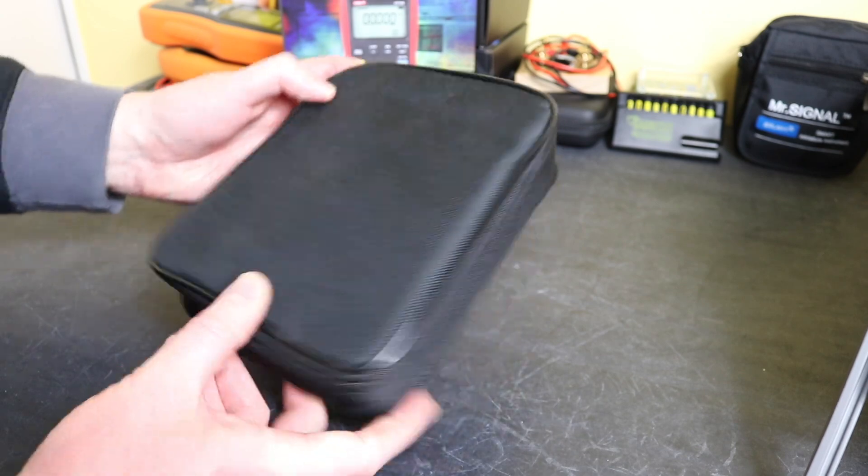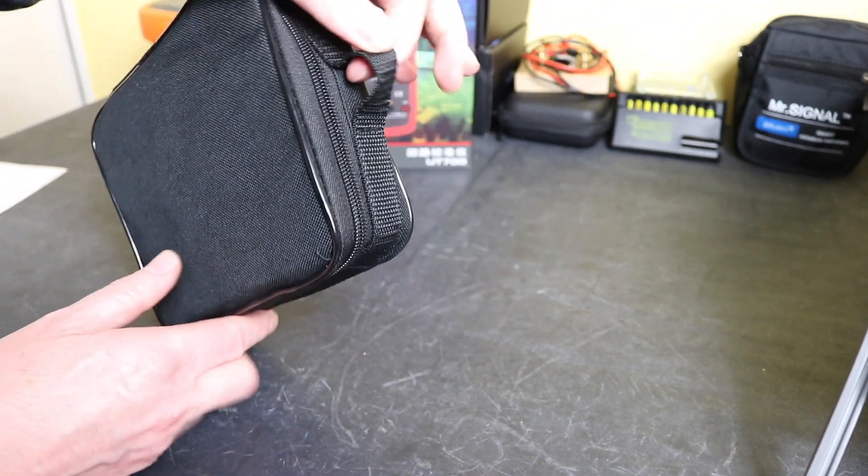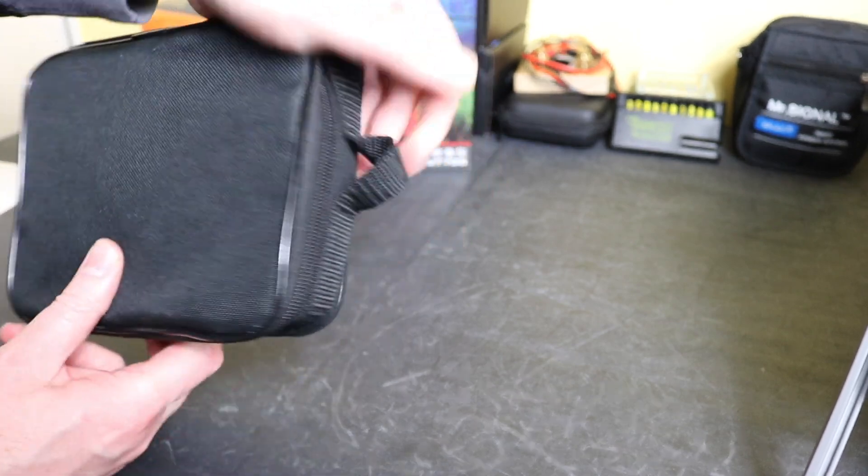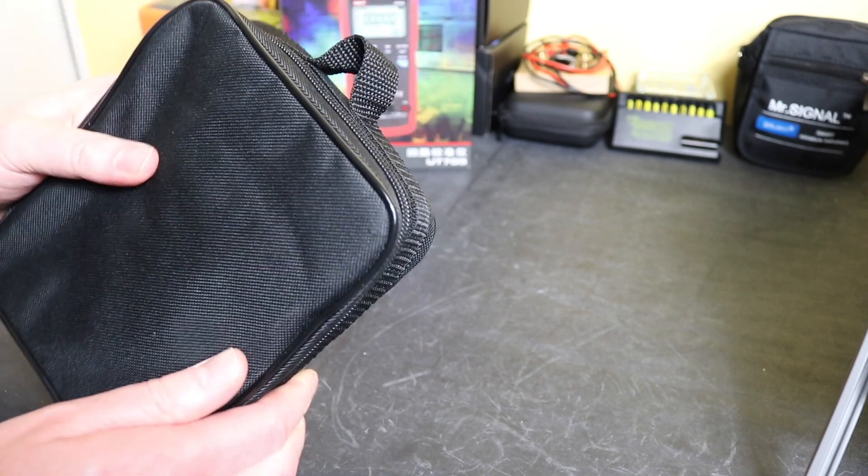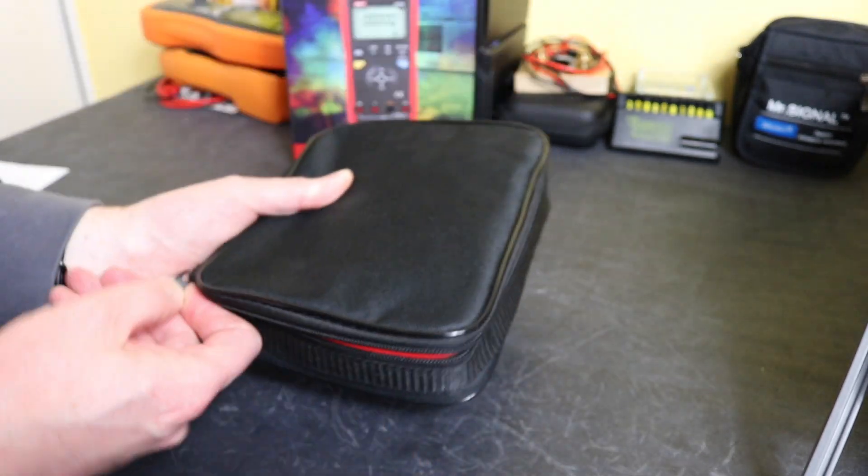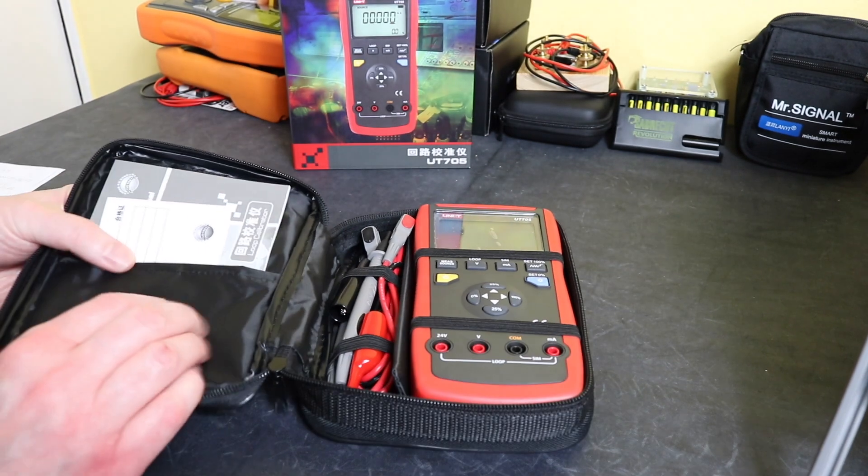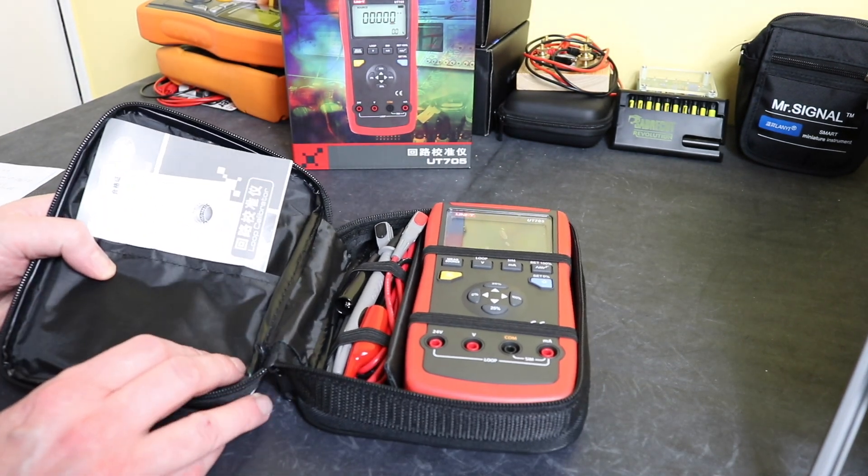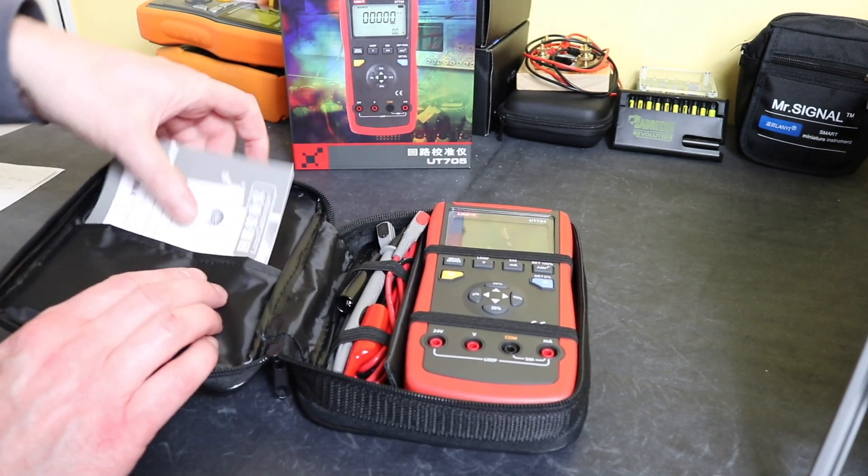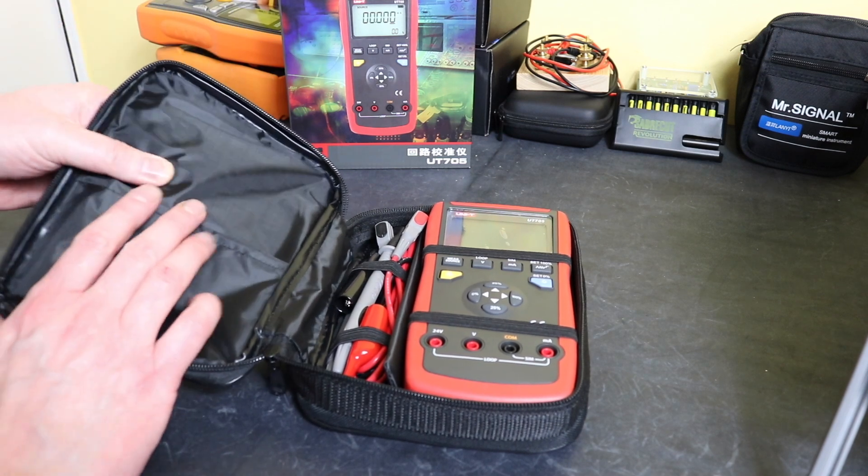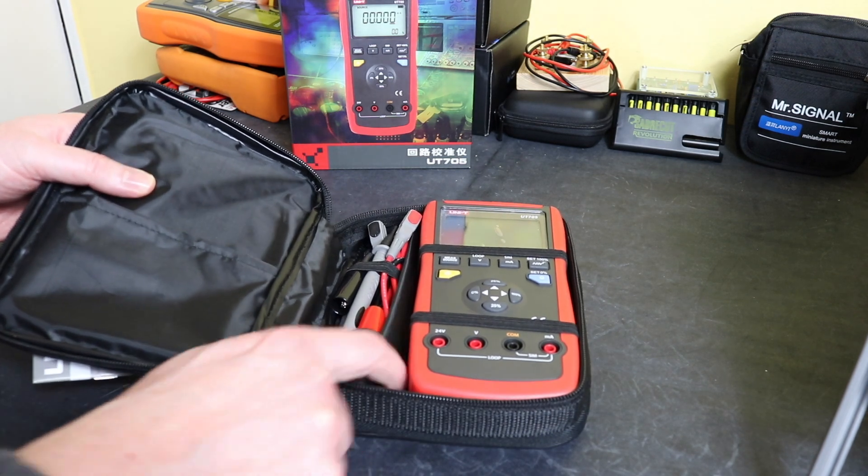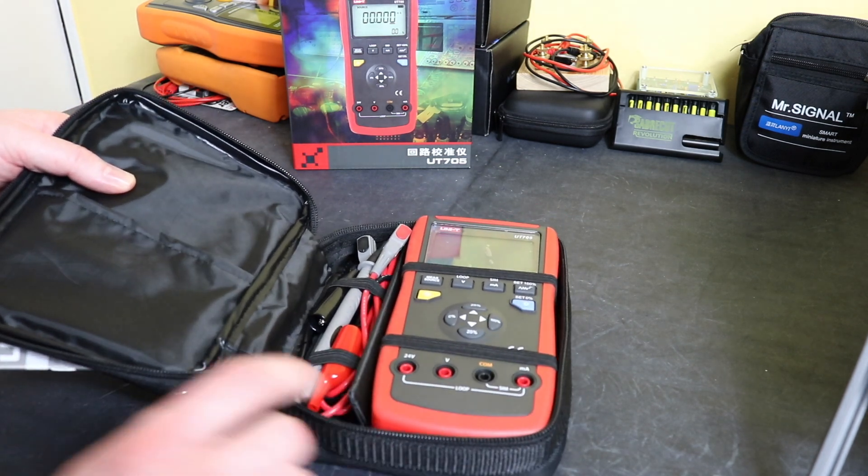There's no logo on the front sides on the bag, small little carry handle at the top here but it's just for one or two fingers, not a full handle, and then a single zipper to get into the bag. Pretty much typical of these cheaper instruments, there's no real padding to speak of in the bag, there's a little bit in the front here but nothing major around the sides or anything.